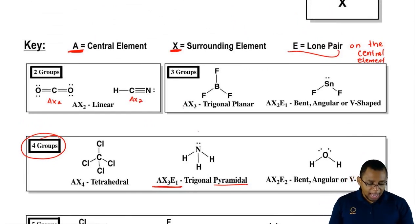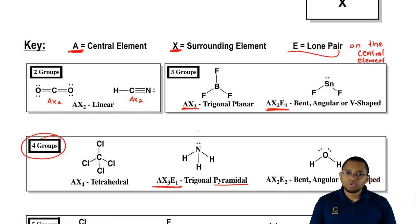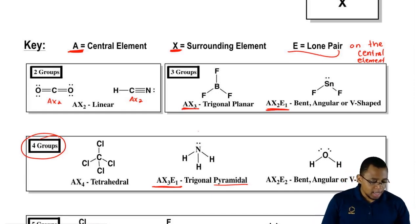For three groups, you could be AX3 where you have no lone pairs, or AX2E1. Here Sn is in the center, it has two surrounding elements, those would be the X, and it has one lone pair so that would be E1.